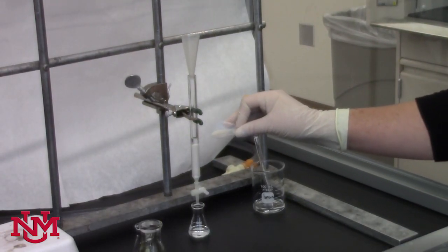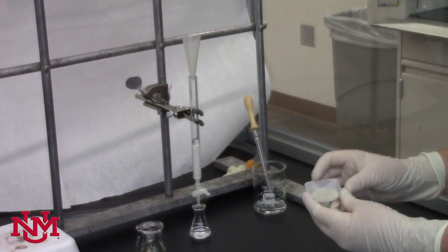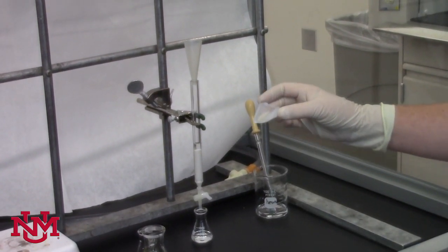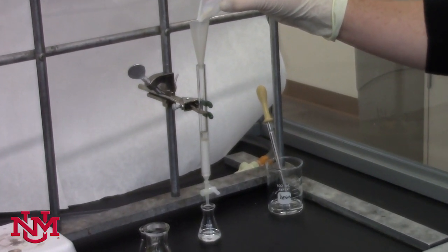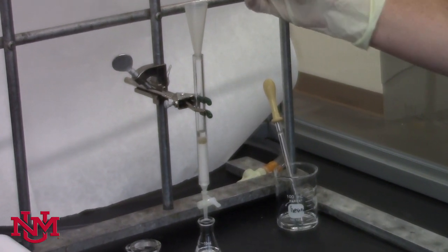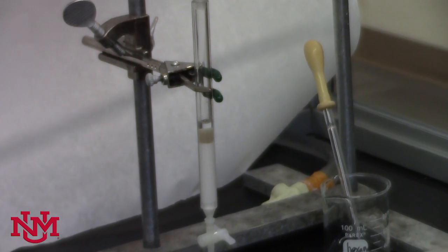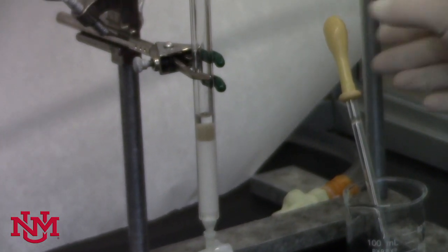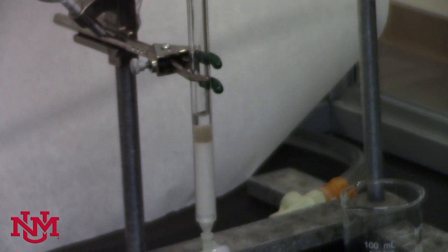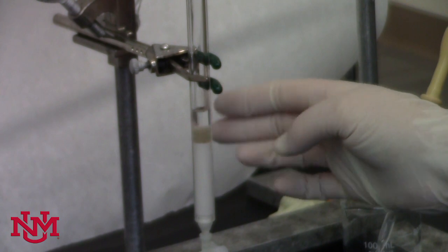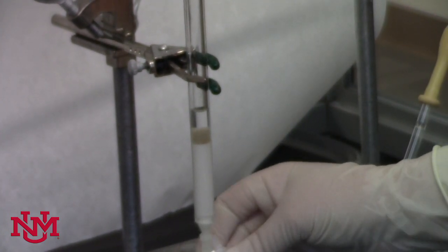Once you have about one centimeter of hexane above the layer of alumina, you'll need some sand, which you can find in the fume hood with all your other reagents. You'll need to take about a centimeter or so of that and add it through the column funnel on top of the layer of alumina. We do that to protect the alumina from anything we're going to add after we put the sand on there. You can use a little bit more hexane to wash down any of the sand, tap it to make sure it's nice and even, and then open the stopcock again.